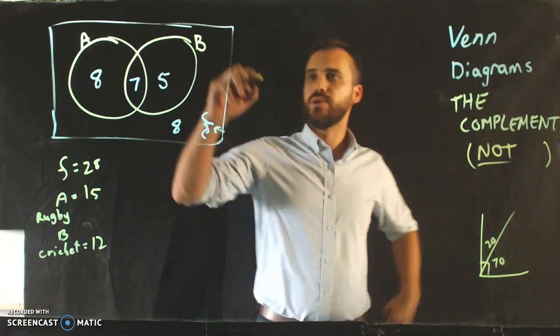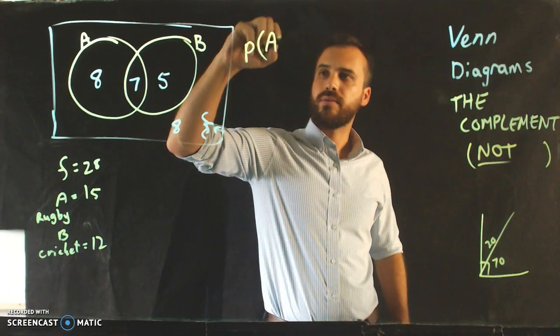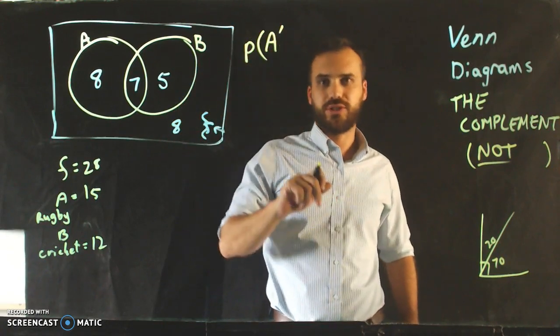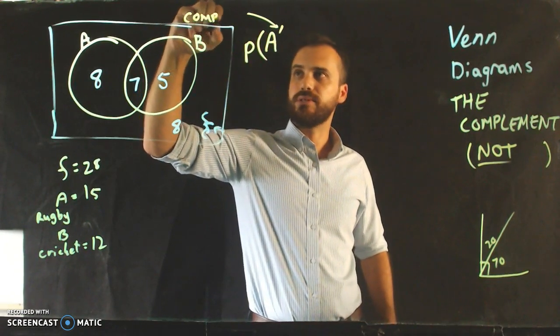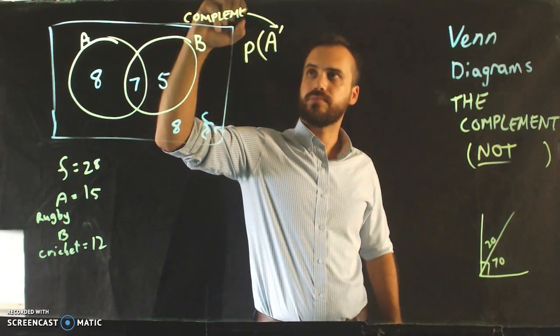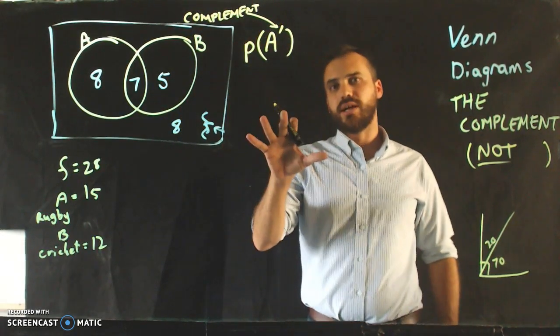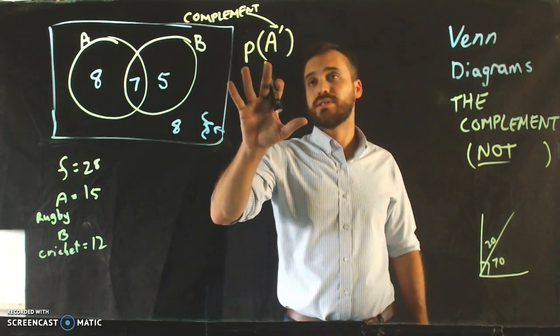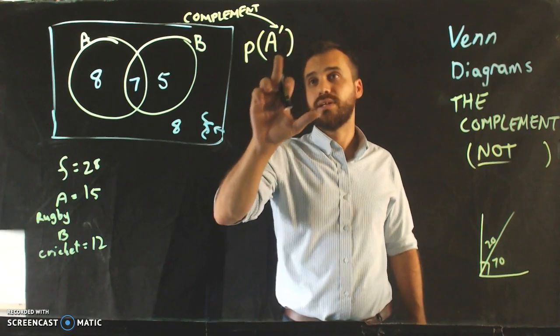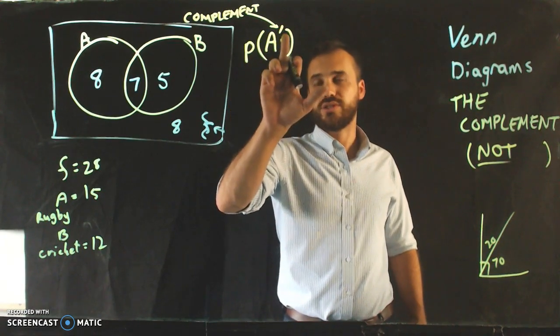So if I say, what's the probability of A dash? The dash stands for complement. If you look at that, you should realize that what that actually says is: what's the probability that something is not in set A?